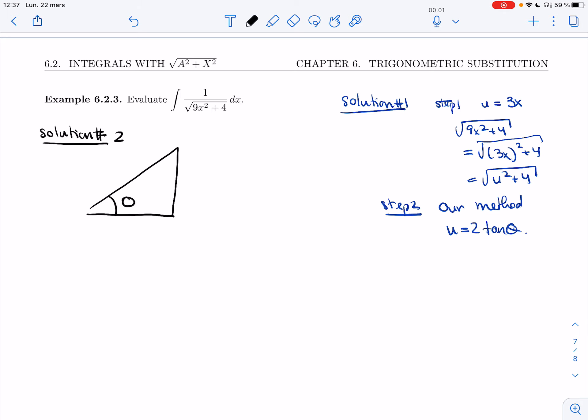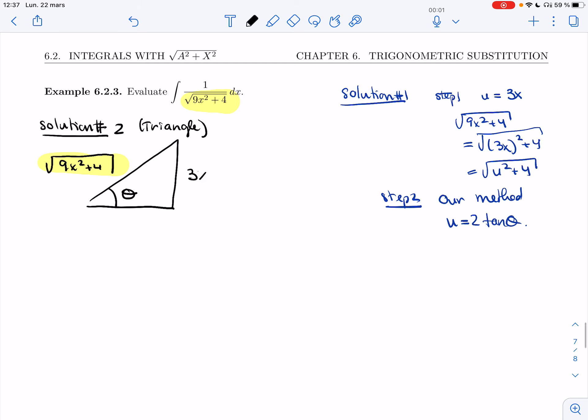I want to build a triangle and I want this part to be the hypotenuse. All right, so we're using a triangle. To get that, I'm going to need 3x and 2. So it's slightly different. I have the 3x here.